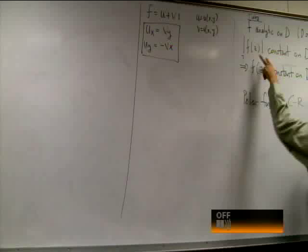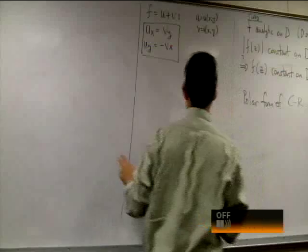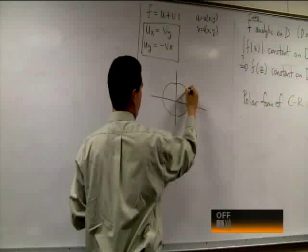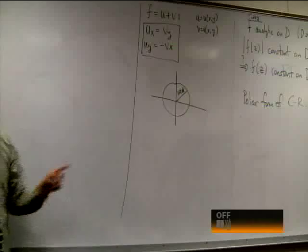That Ux should equal Vy, and Uy should equal minus Vx, right? Those are the Cauchy-Riemann equations. And then the next line tells us that if we look at F(z), where z comes from this domain D, and we look at the magnitude of that complex number, that's always the same on this D.